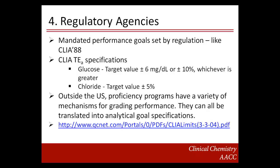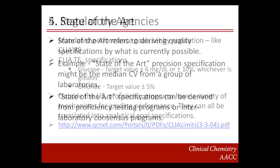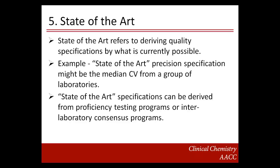Outside the U.S., there are proficiency programs with a variety of mechanisms for grading performance that can all be translated into analytical goal specifications. The last in the hierarchy is quality specifications based on state-of-the-art, which refers to deriving quality specifications by what is currently possible. An example might be taking the median CV from a group of laboratories. State-of-the-art specifications can be derived from proficiency testing programs or interlaboratory consensus programs.